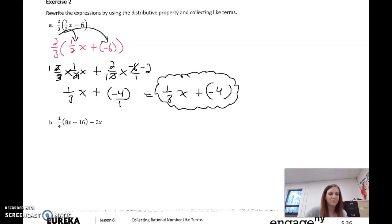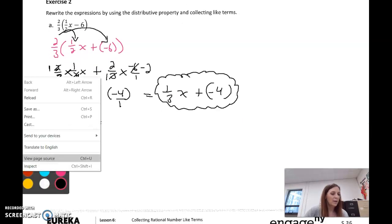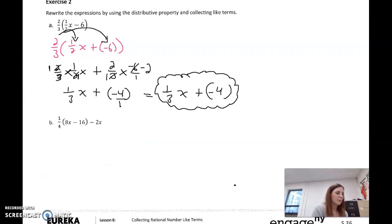One more example. So, as with everything, I'm changing all of this minus here to adding. So I'm going to say one-fourth times eight x. Instead of saying minus 16, I'm going to say plus a negative 16. Subtracting is the same thing as adding the opposite. And then, instead of saying minus two x right here, I'm going to change a minus to plus. Change two x to its opposite, negative two x.